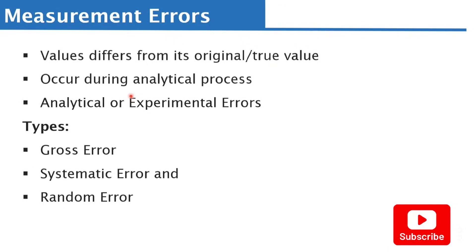There are three main types of measurement errors. Sometimes people consider only two, because gross error can be seen within both systematic and random error. However, I have chosen to include it separately. The three main types are: gross error, systematic error, and random error.